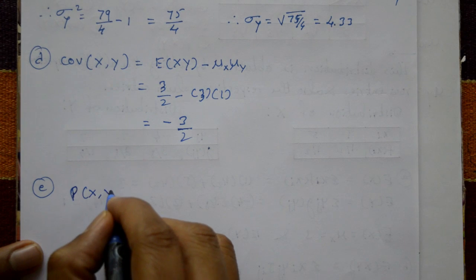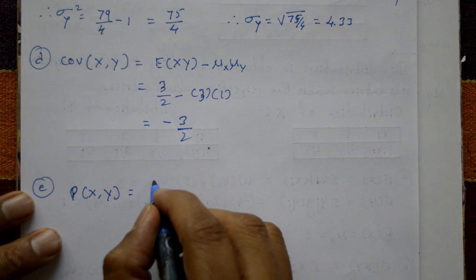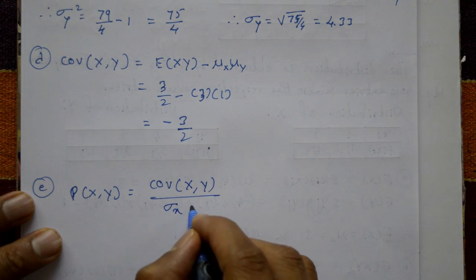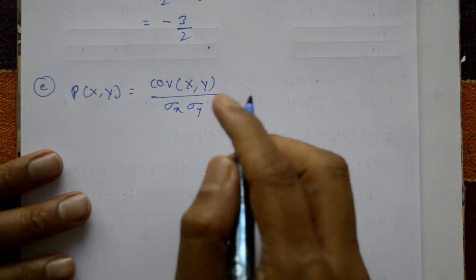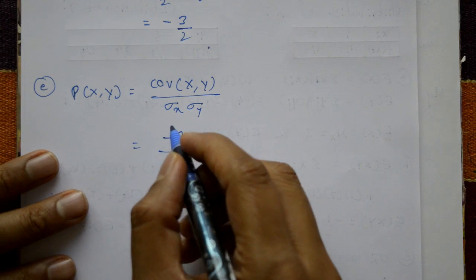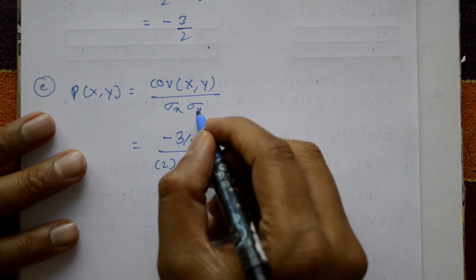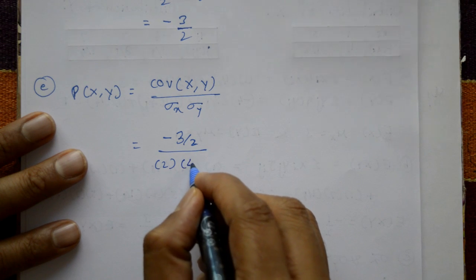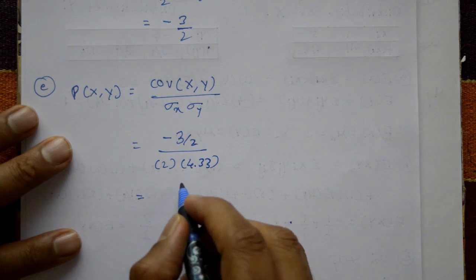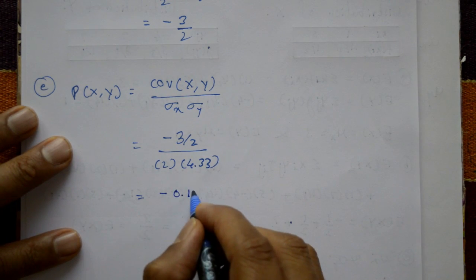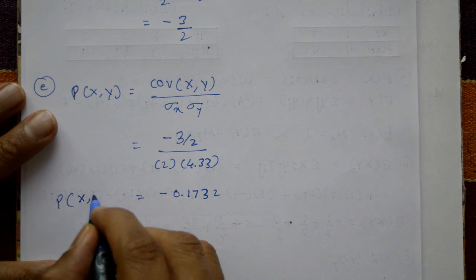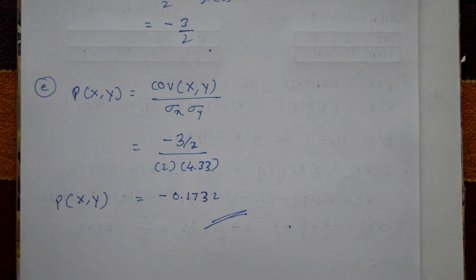For part (e), correlation of X and Y. The formula is ρ(X,Y) = Cov(X,Y) / (σₓ · σᵧ). Substituting: ρ(X,Y) = (−3/2) / (2 × 4.33). Using a calculator, this equals approximately −0.1732. This is the required solution.